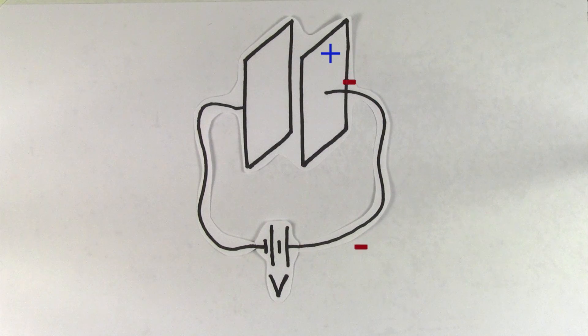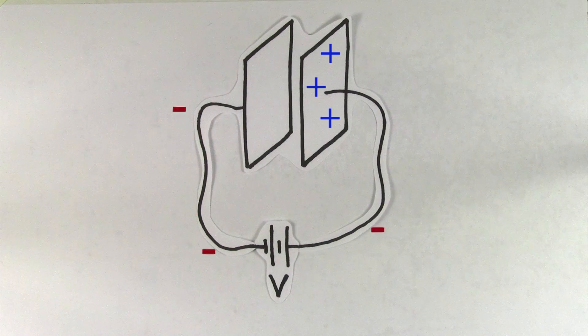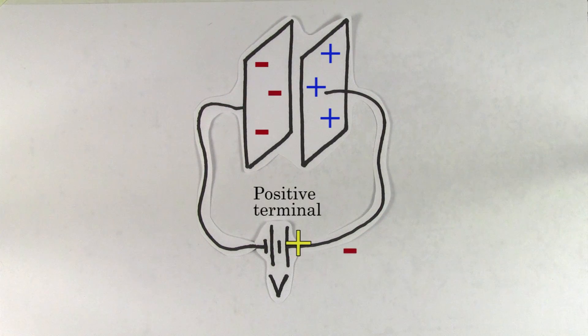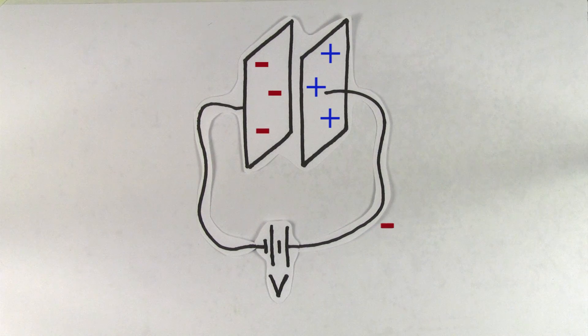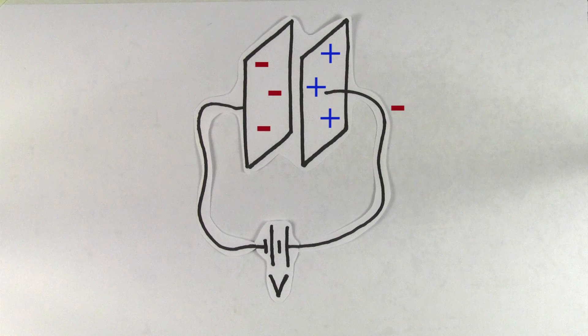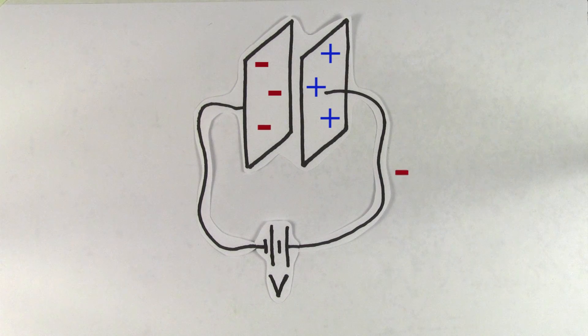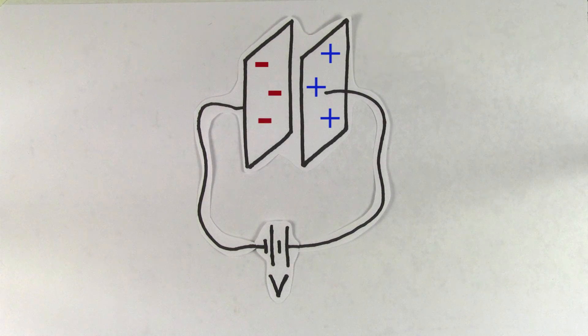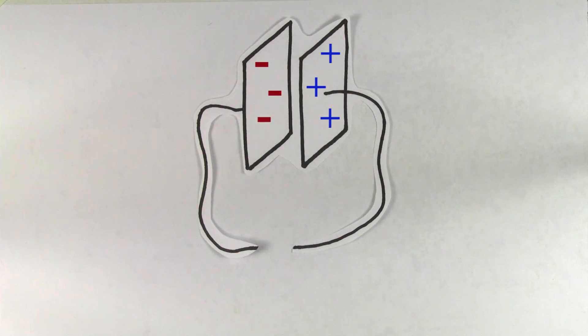This process of charge switching sides won't continue to happen forever though. Negative charges on the right side that are attracted toward the positive terminal of the battery will start to also get attracted toward the positively charged piece of metal. Eventually, the negative charges will get attracted to the positive piece of metal just as much as they're attracted toward the positive terminal of the battery. Once this happens, the process stops and the accumulated charge just sits there on the pieces of metal. You can even remove the battery and the charges will still just continue to sit there.